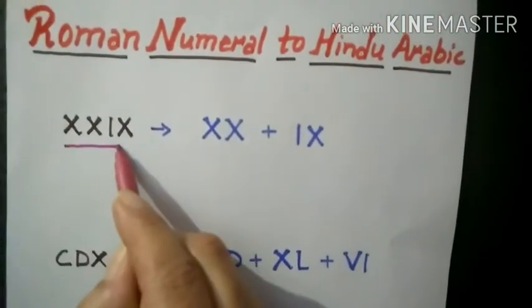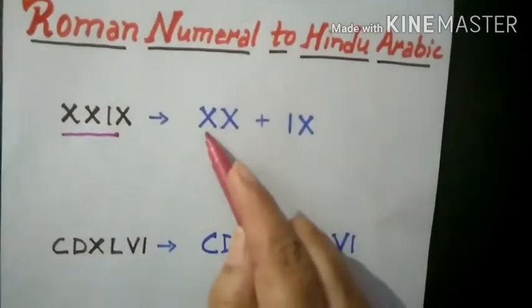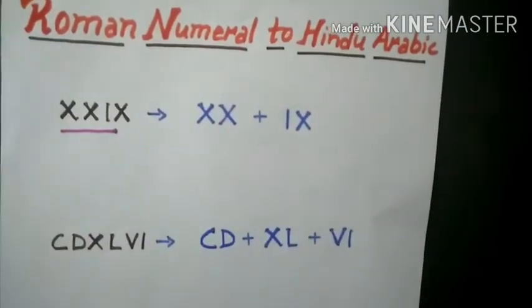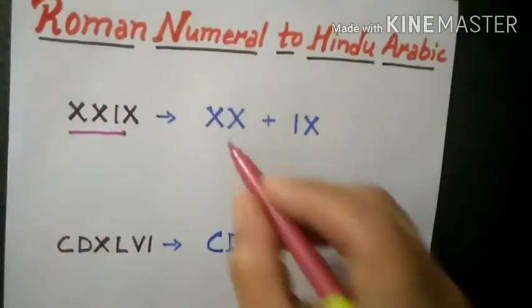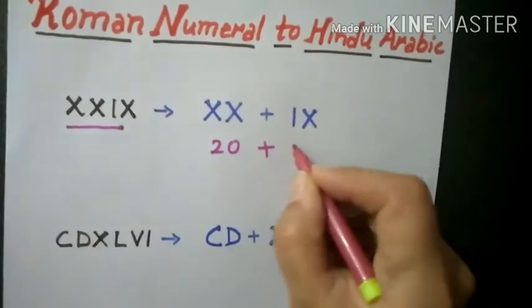Now, another number is given. We have to expand it into two parts. We have written two times X here and I X. Now, two times X is 20. I X is 9.